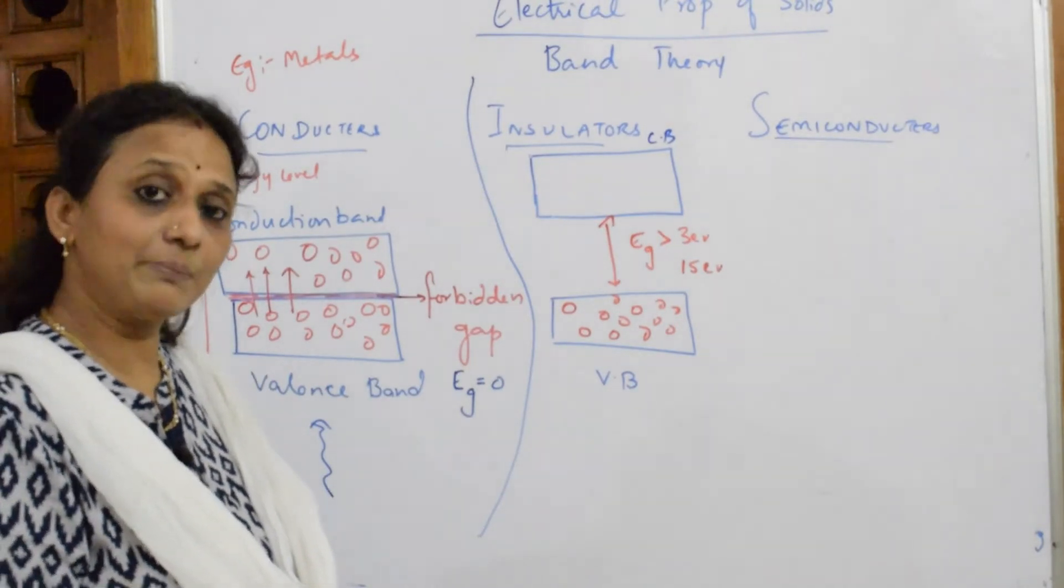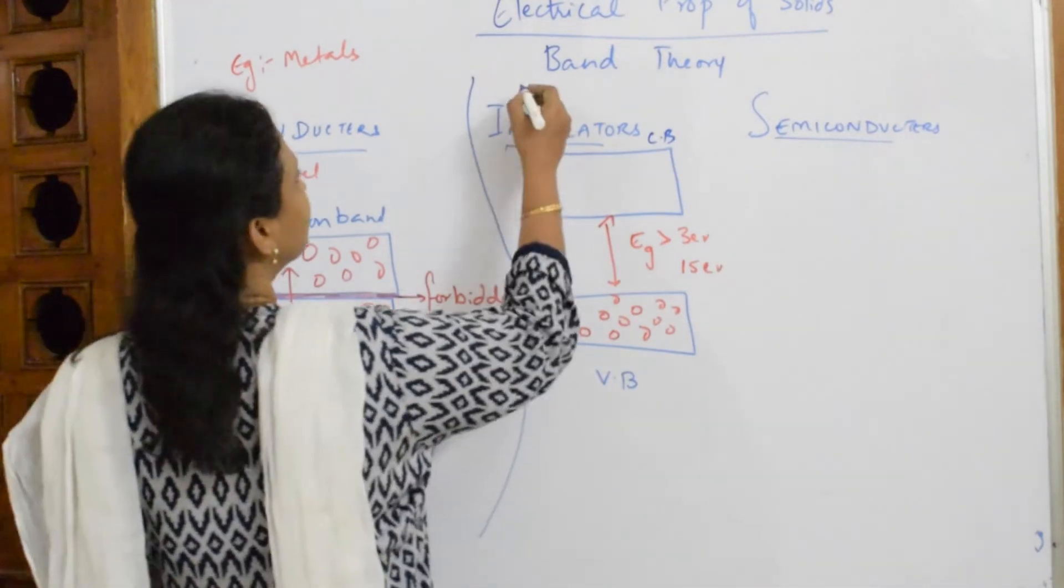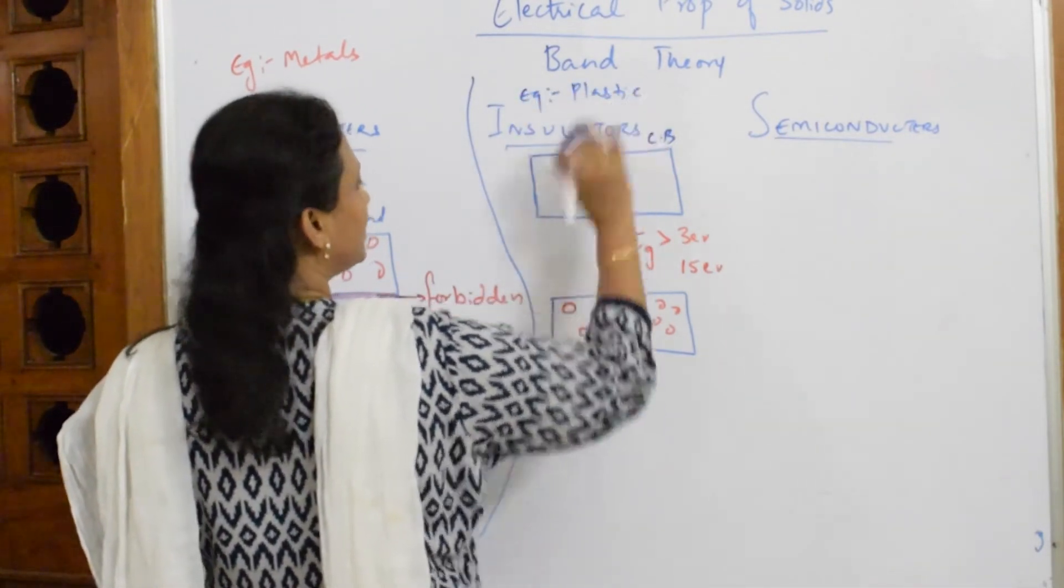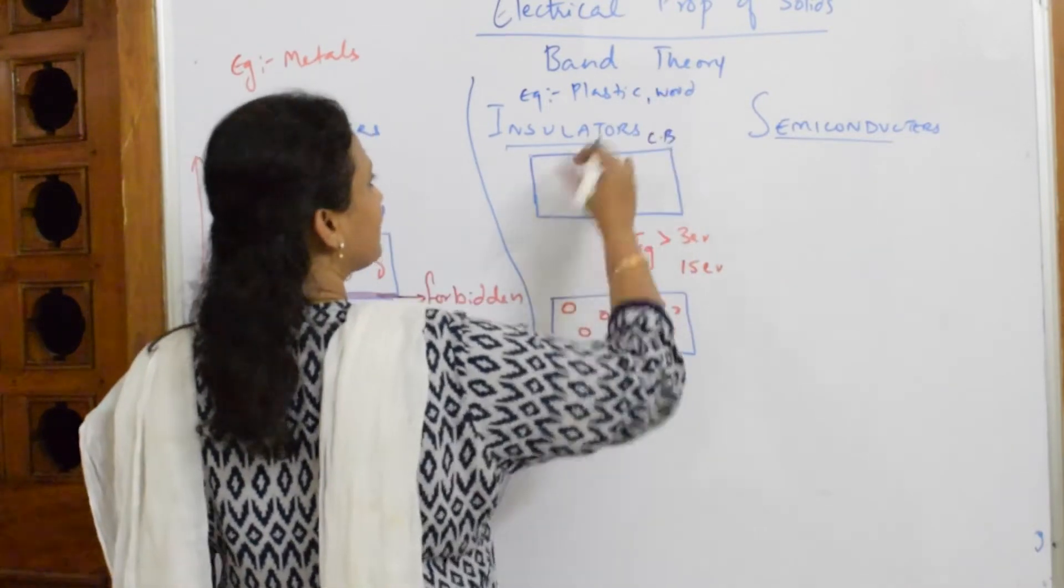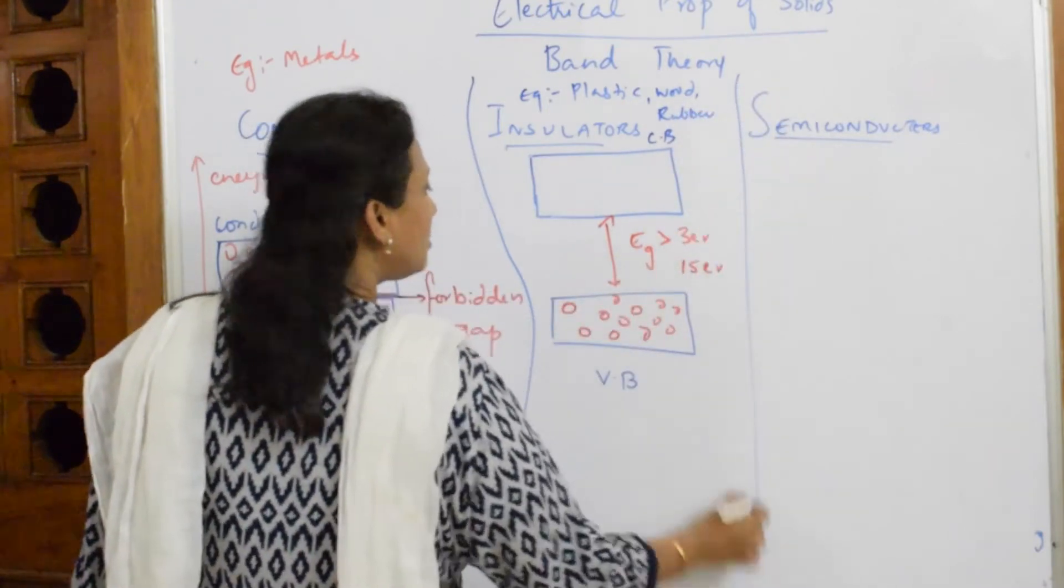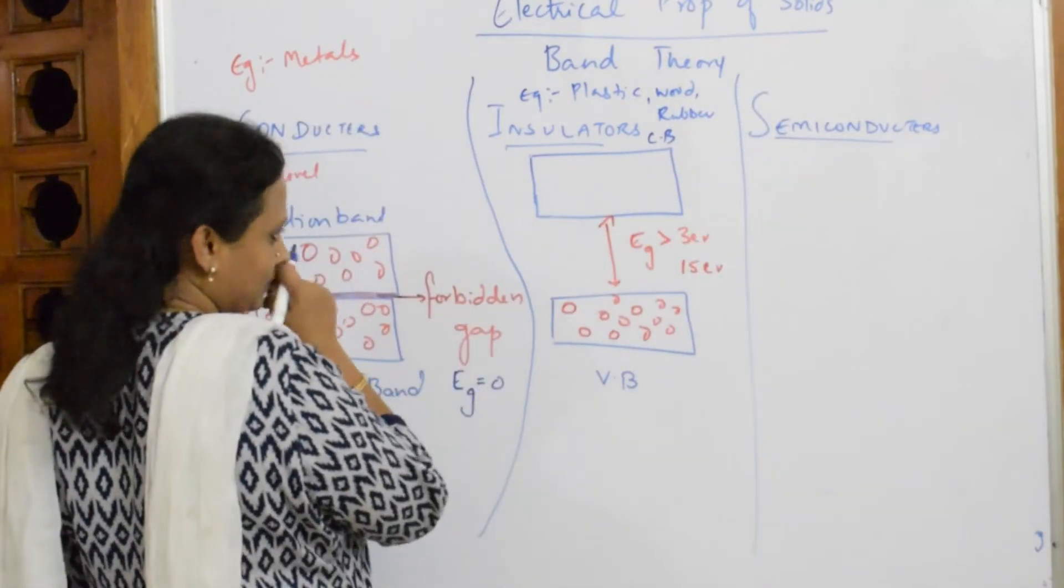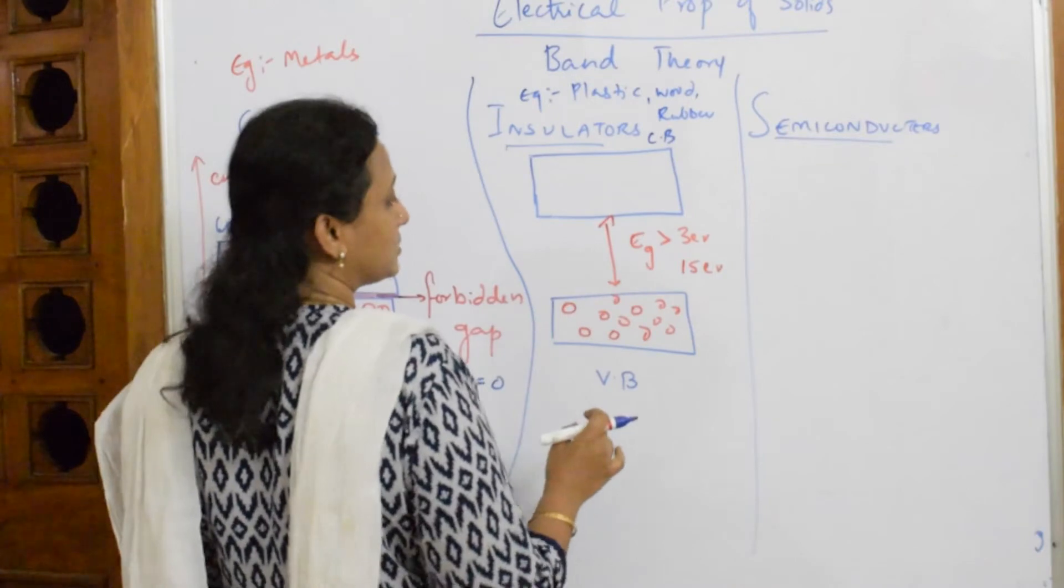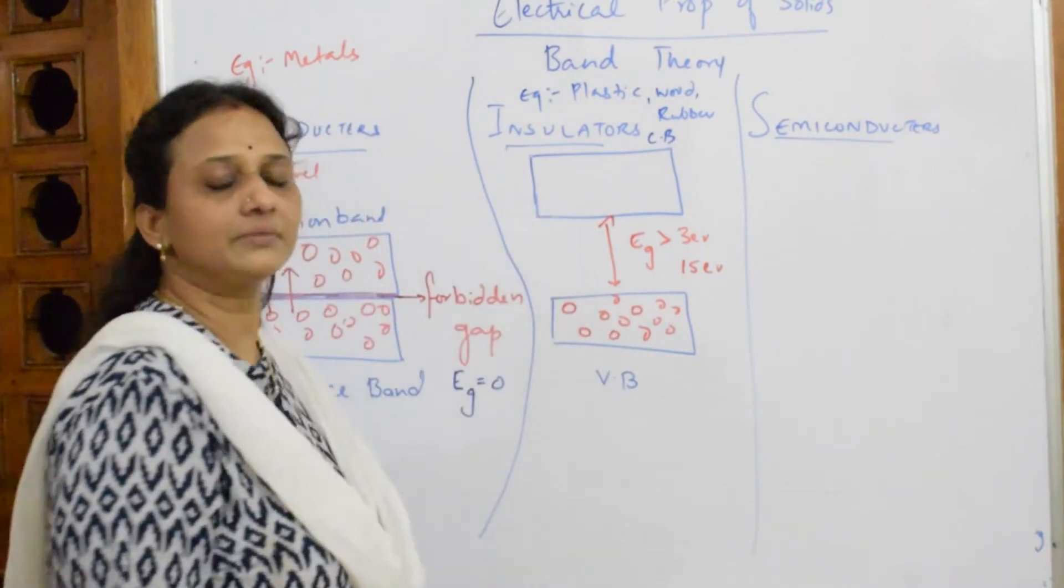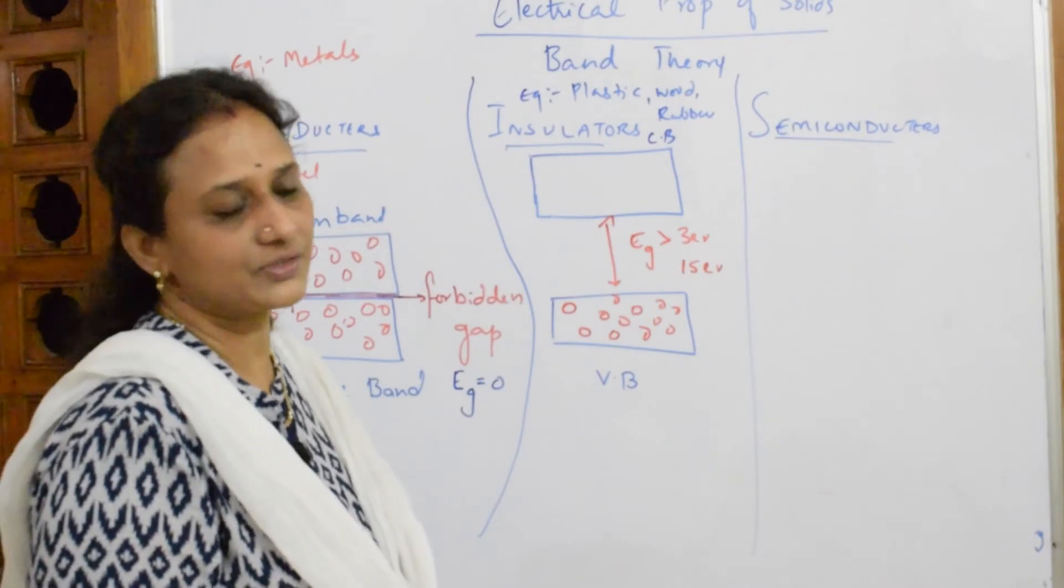Wood is an insulator. Rubber is an insulator. So, let us write the example. Example, plastic insulator. Because the gap is large. Wood is an insulator. Gap is large. Rubber is an insulator. Gap is large. Now, because of this wide gap in between, it is more than 3 electron volts. These electrons can't enter into the conduction band. So, they don't conduct electricity.